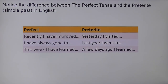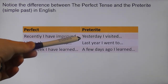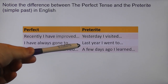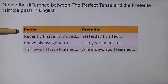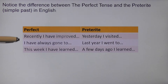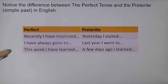We also need to be aware of when we use the perfect tense in both English and Spanish, and how it differs from our simple past, known as the preterite. For example: yesterday I visited, last year I went to, a few days ago I learned — these are all very specific dates when something happened. Whereas with the perfect tense, you have words like recently, I have always gone to — that's habitual — this week I have learned. That's the key difference between those two tenses.